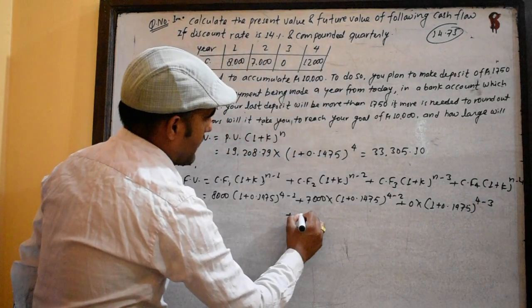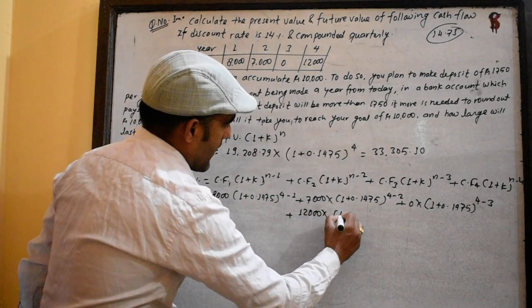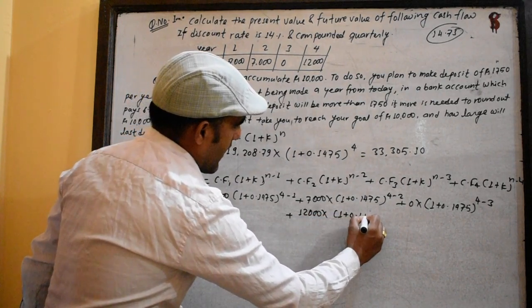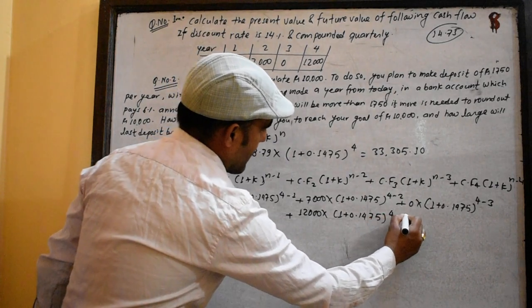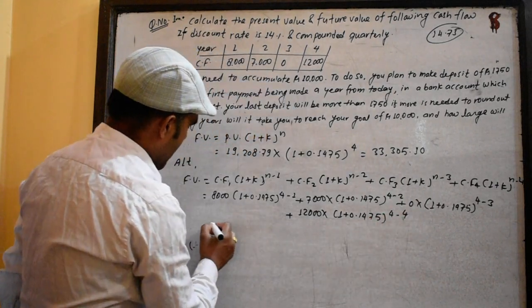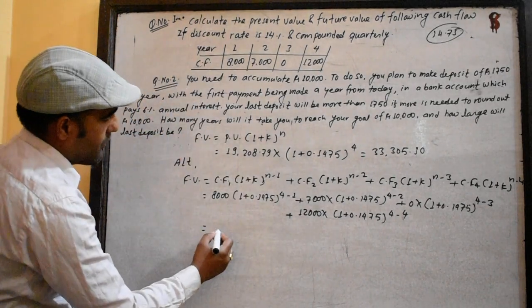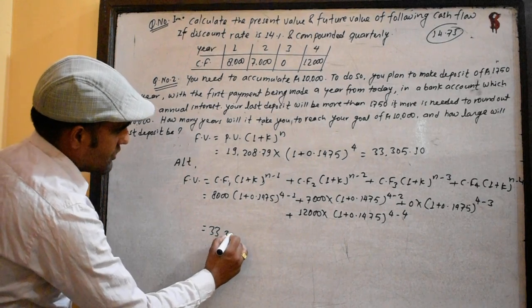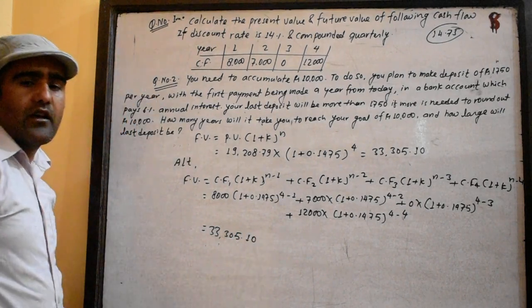Using 2 times (1 + 0.1475)^4, the future value calculation gives us an answer of 33,305.10.